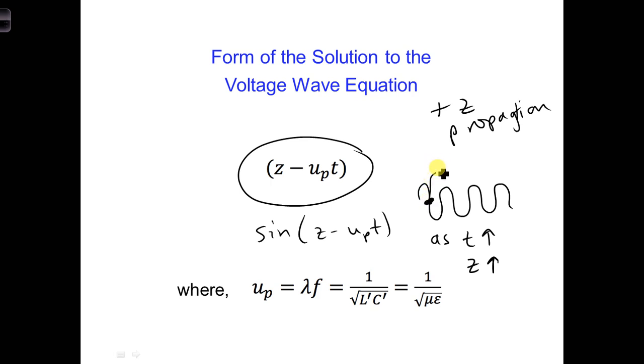So here, if this is at the place where sine of z minus up*t is sine of zero, as t goes up, z also has to go up in order for the argument to remain zero.